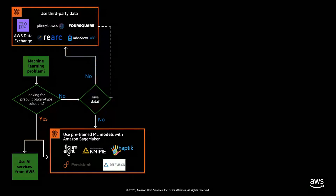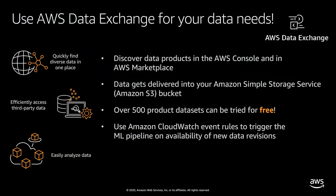For deploying an ML model, you require data. If you don't have the data you need, you can procure it from AWS Data Exchange. AWS released AWS Data Exchange in November 2019, and it contains over 2,000 data product listings. You can find a diverse selection of data products from third-party vendors such as Pitney Bowes, Foursquare, John Snow Labs, and many others.